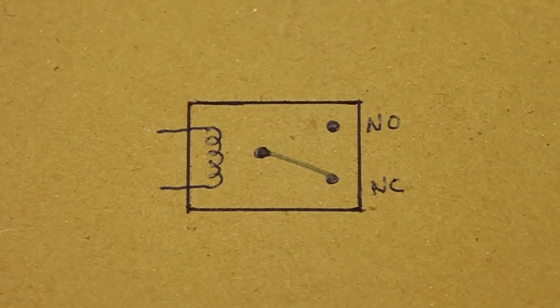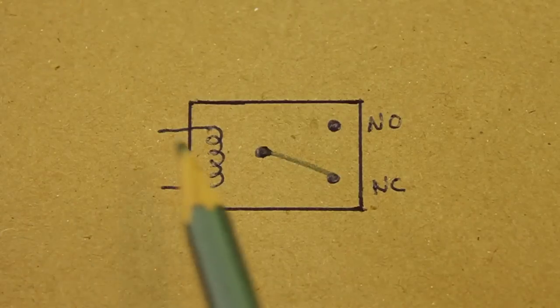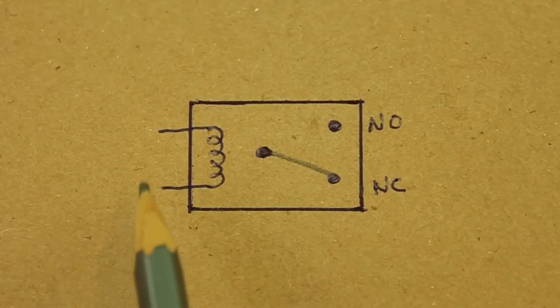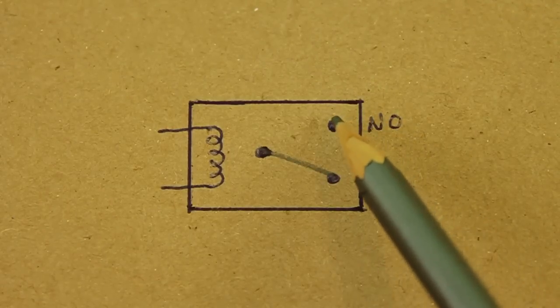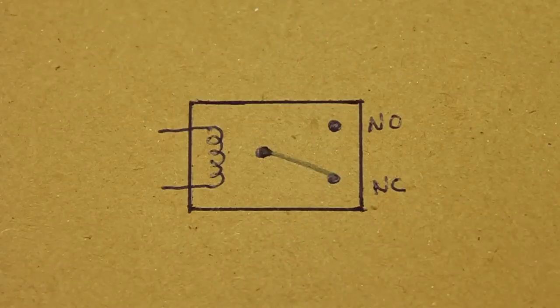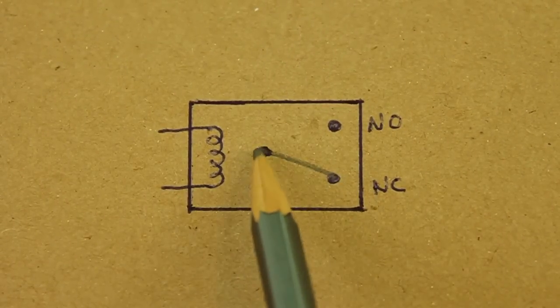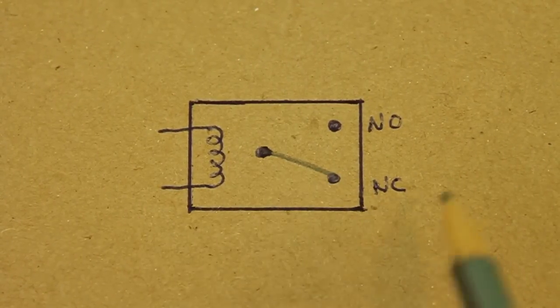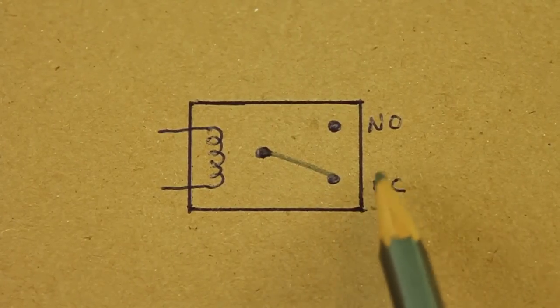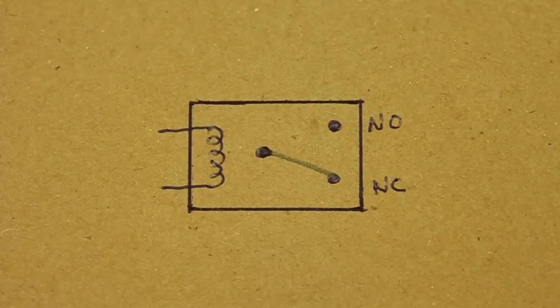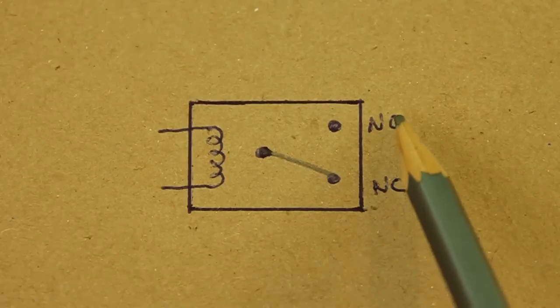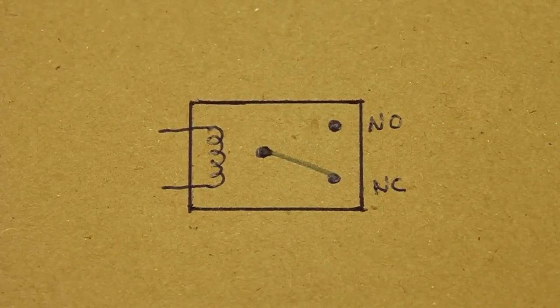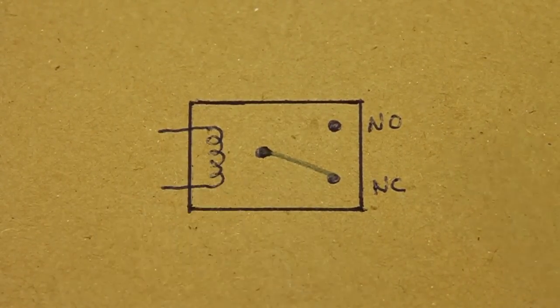The way in which a single pole double throw relay works is the following. Here we have the coil, the two contacts. This is the common contact, this is the normally open contact and normally closed. There is continuity between these two contacts, and because of that this contact is normally closed and the other has no continuity with the common. So it is the normally open contact. This is the situation when the coil is not energized.